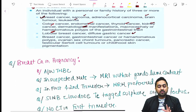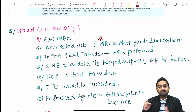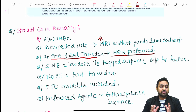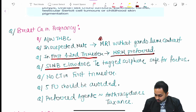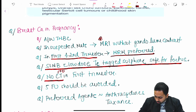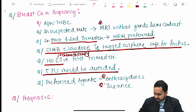Breast cancer in pregnancy is most commonly associated with triple negative breast cancer. For suspected metastasis, MRI without gadolinium contrast is preferred over CT scan, which could be harmful to the fetus. In the first and second trimester, MRM is preferred because BCS would require delayed radiotherapy (after delivery), which poses potential high risk. Sentinel lymph node biopsy with low-dose technetium sulfur colloid is safe for the fetus. No chemotherapy is given in the first trimester, 5-fluorouracil should be avoided, and preferred agents are anthracyclines and taxanes.